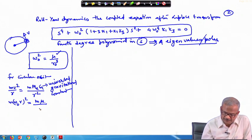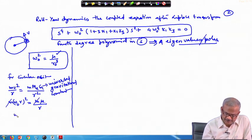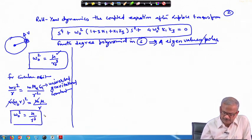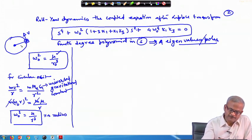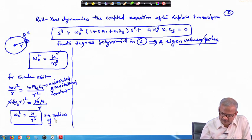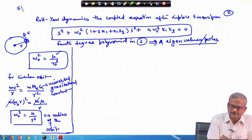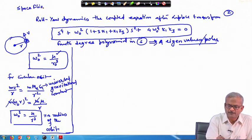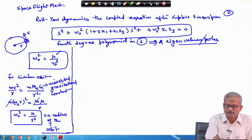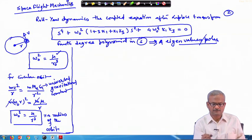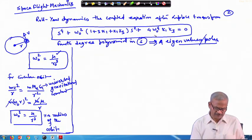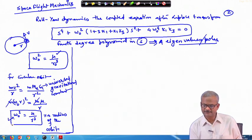This gets reduced, with m canceling out, to omega_0 squared equals mu divided by r cubed, where r is the radius of the orbit. If you want to learn in detail, look into the lecture notes on space flight mechanics on NPTEL. This omega_0 appearing in our equations is exactly this quantity.